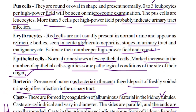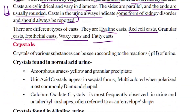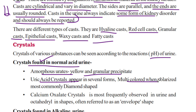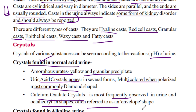Crystals of various substances can be seen according to the pH of urine. Crystals found in normal acid urine include amorphous urates, which appear as a yellow granular precipitate. Uric acid crystals appear in several forms — multicolored when polarized, most commonly diamond-shaped. Calcium oxalate crystals are most frequently observed in an octahedral shape, often referred to as envelope shape.